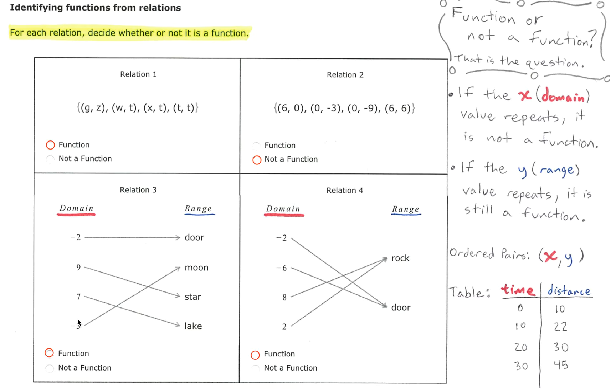To determine whether or not these are repeating we have to take a look at the arrows that are pointing at the range values. As long as there is only one arrow coming out of each domain value we know that we have a function.